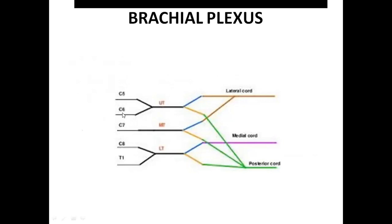These are the roots: C5, C6, C7, C8 and T1. C5 and C6 together join to form the upper trunk. C7 alone forms the middle trunk and C8 and T1 together form the lower trunk. Each trunk then divides into anterior division and posterior division.